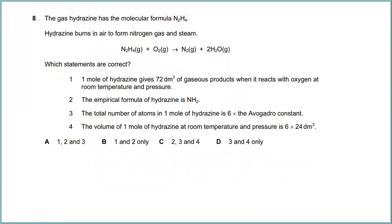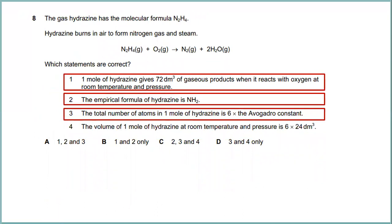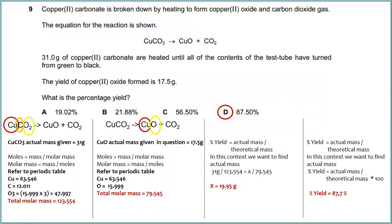Question eight: the gas hydrazine has the molecular formula N₂H₄. Hydrazine burns in air to form nitrogen gas and steam. Which statements are correct? The answer is 1, 2, and 3: one mole of nitrogen produces 72 dm³ of gaseous products at room temperature and pressure; the empirical formula of hydrazine is NH₂; and the total number of atoms in one mole of hydrazine is 6 multiplied by the Avogadro constant.